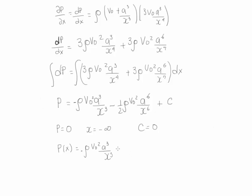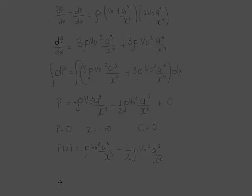Therefore, the pressure distribution as a function of x is: P equals rho V₀² a³/x³ minus (1/2) rho V₀² a⁶/x⁶. With this equation, you can find any pressure value along any location on the streamline. Please go back and make sure you can derive the same equations and understand the difference between pressure gradient and pressure distribution.